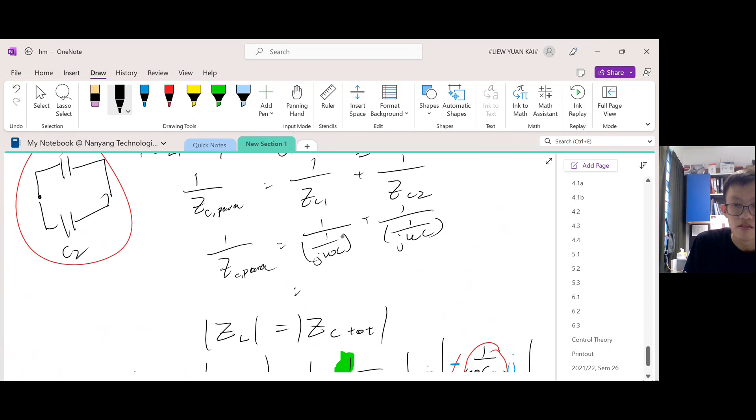Reciprocal of reciprocal is just back to normal, which is just j omega C. And then the same thing, j omega C. I add them together, I'll get 2j omega C.